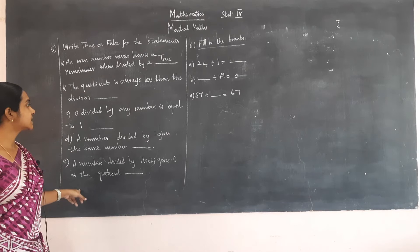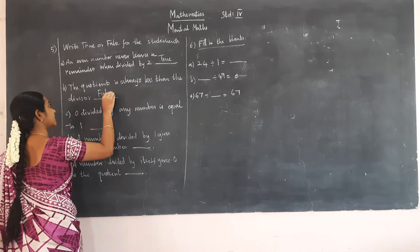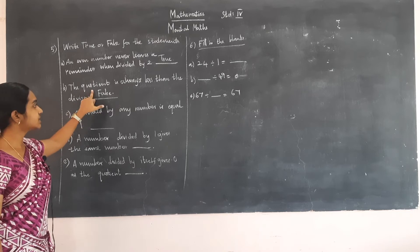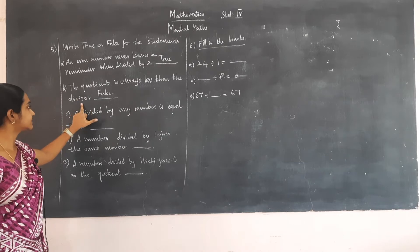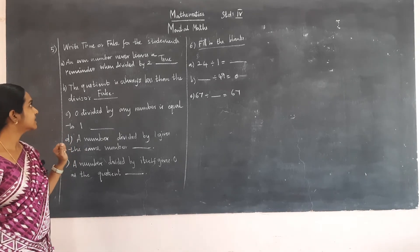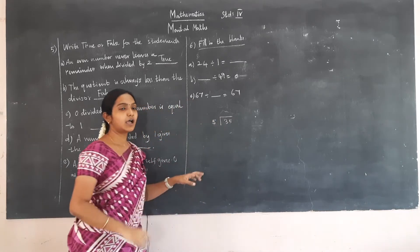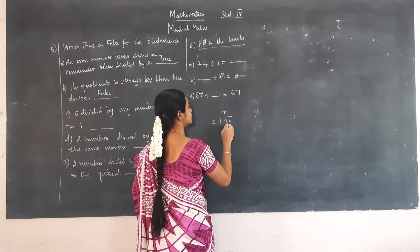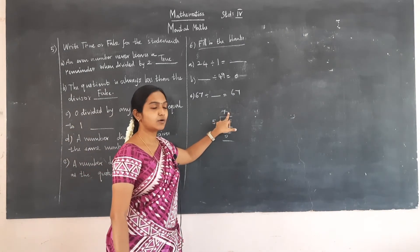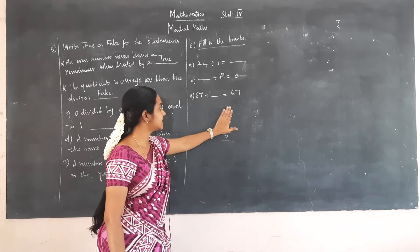The next statement: the quotient is always less than the divisor. The statement is false, because the quotient can be greater than the divisor. For example, dividing 35 by 5: 7 fives are 35, giving quotient 7 and remainder 0. Here 5 is the divisor and 7 is the quotient. Since 7 is greater than 5, the quotient is greater than the divisor. So the statement is false.